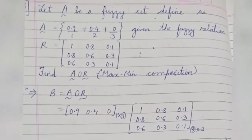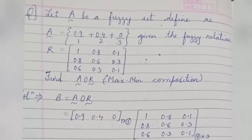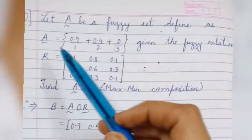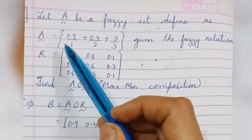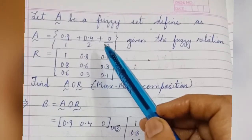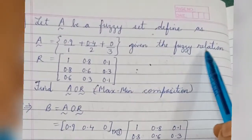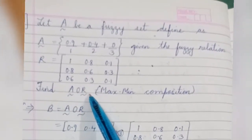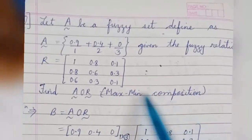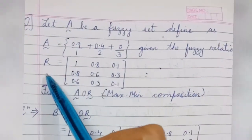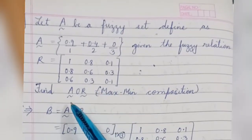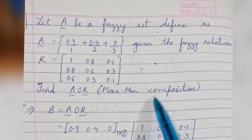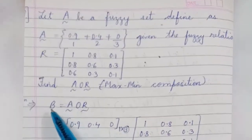Hello and welcome to Infinite Learnopedia channel. This video covers maximum composition. Let A be a fuzzy set defined as A = {0.9/1, 0.4/2, 0/3}, and given the fuzzy relation matrix R, we have to find A composition R using maximum composition.